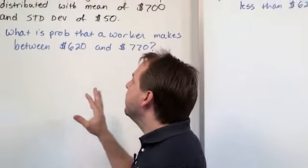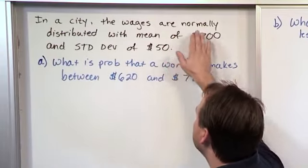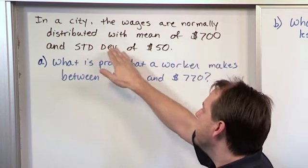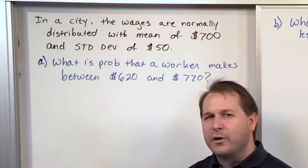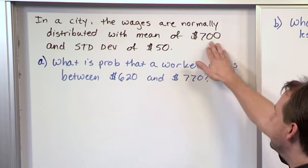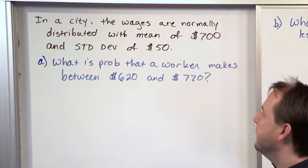So the problem here is in a city, the wages are normally distributed with a mean of $700 and a standard deviation of $50. These problems are all made up, so when we say this, it's probably like a weekly salary of $700, a standard deviation of $50.